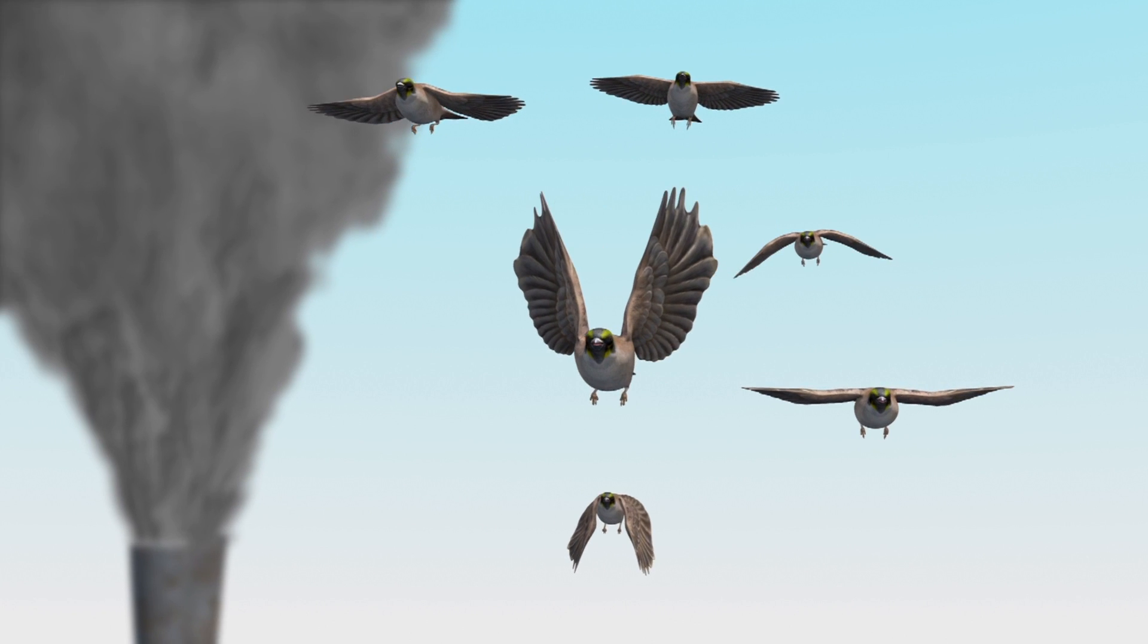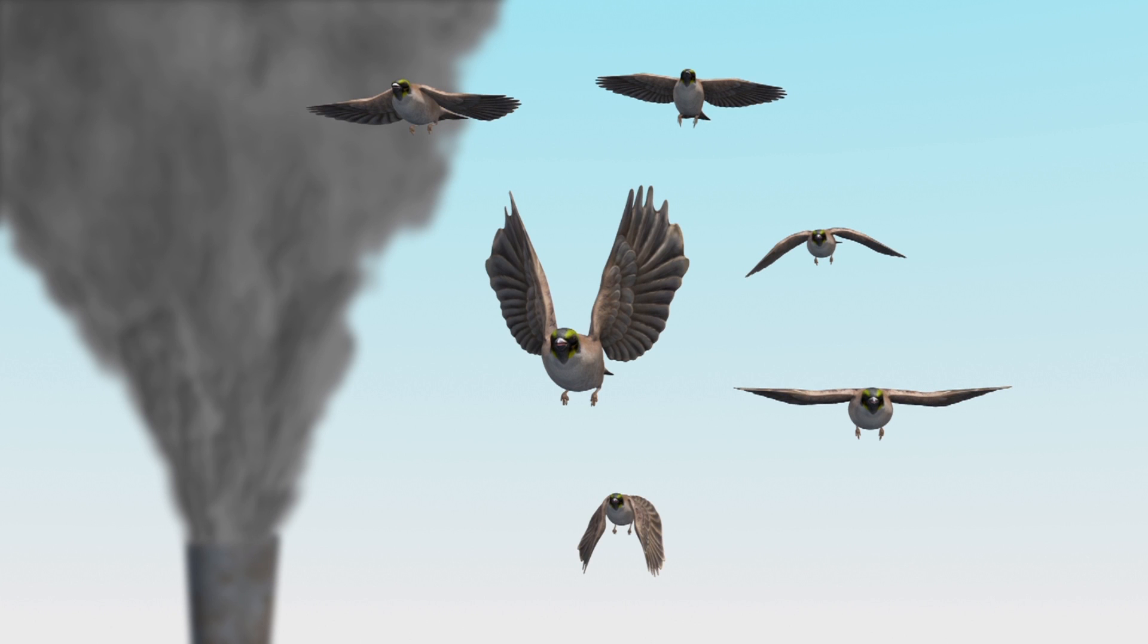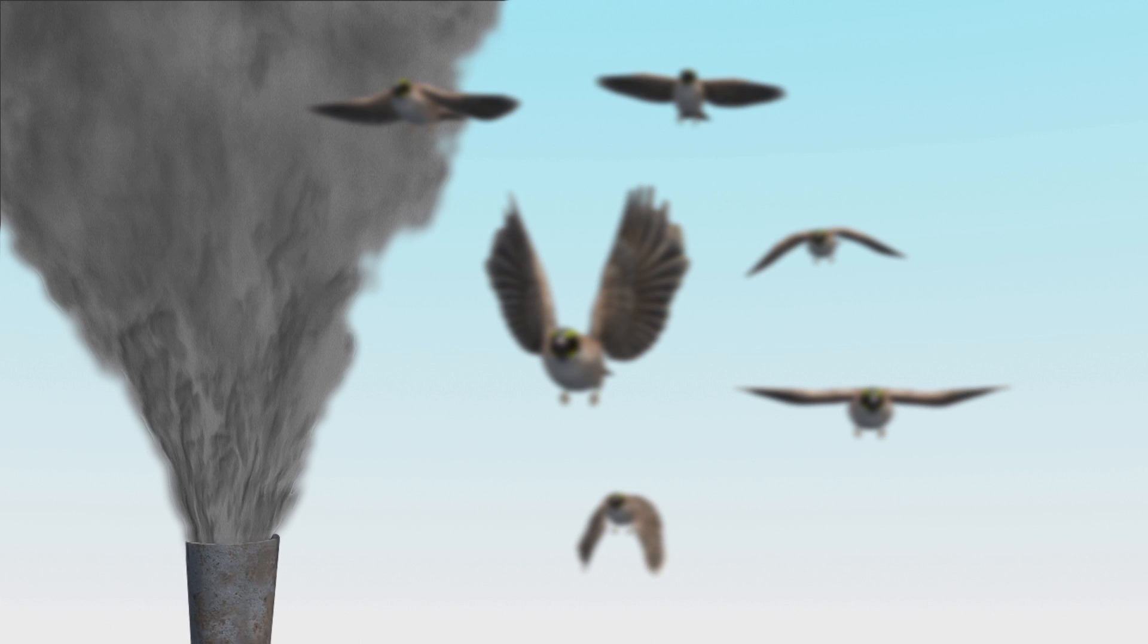A new paper shows that discoloration of birds in museum collections can be used to estimate the amount of black carbon in air over time.